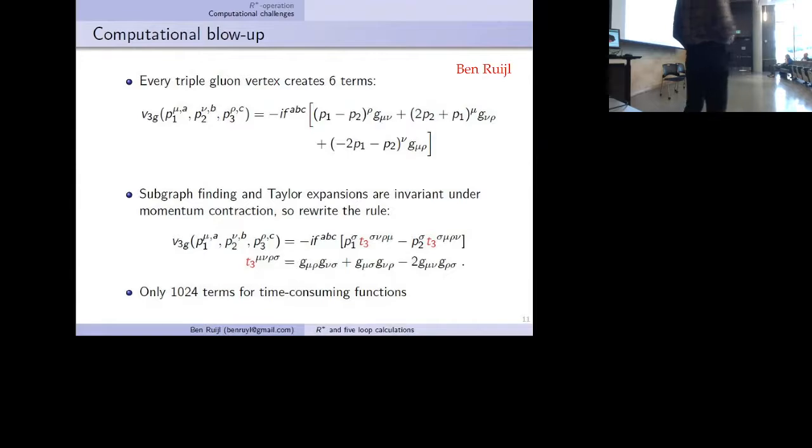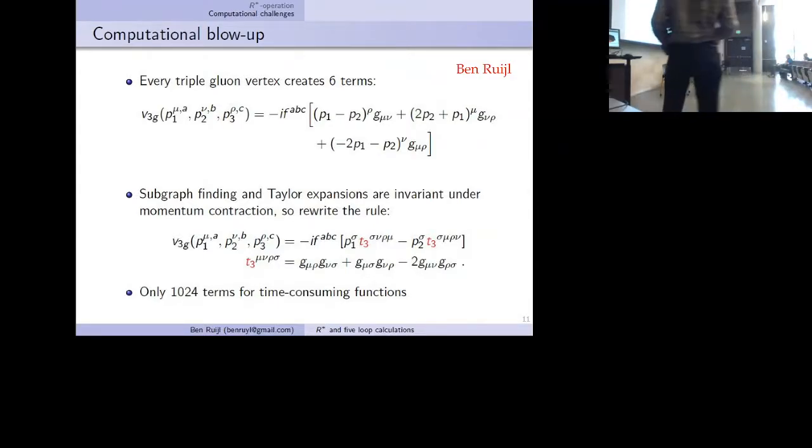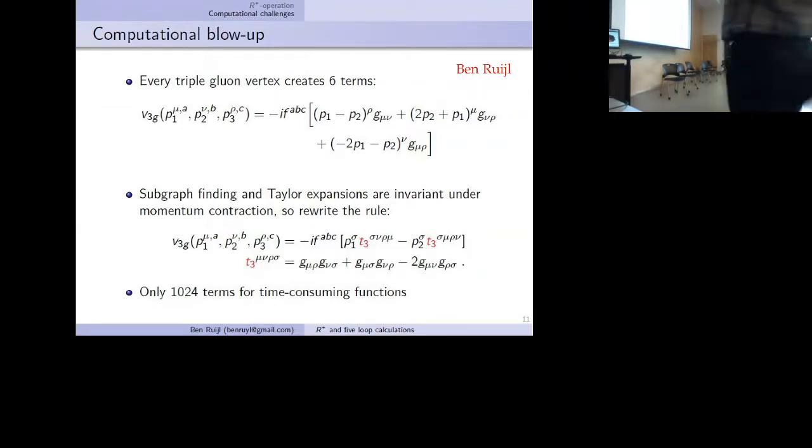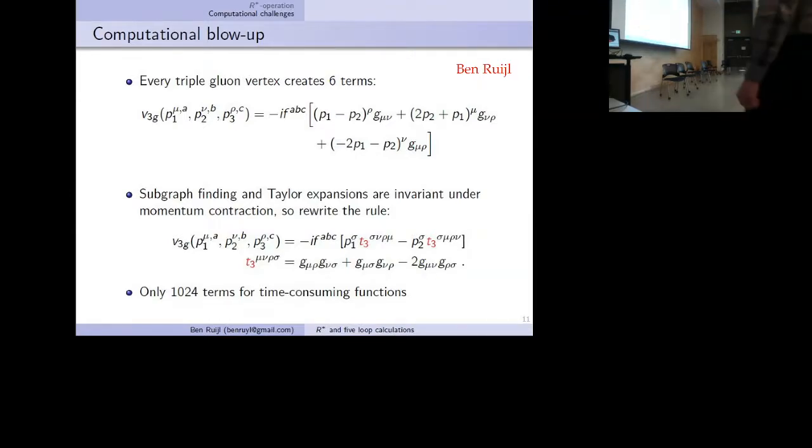Let me start out, for instance, by a presentation by Ben Rao, who was talking about a massive five-loop calculation that he and his collaborators performed. It turned out they had an enormous number of terms that even on a powerful computer cluster would not be able to be processed. But just by rewriting one vertex in a different way, they were able to reduce the number of crucial terms for the algorithm by many orders of magnitude, and that made the calculation possible.